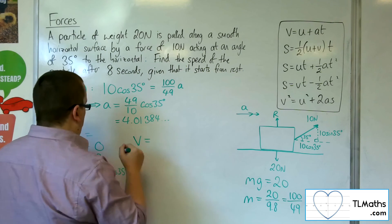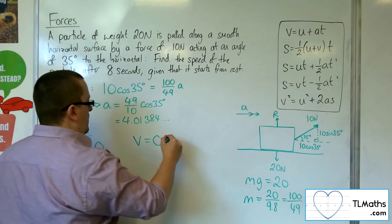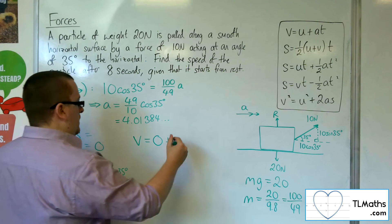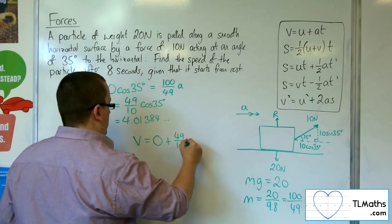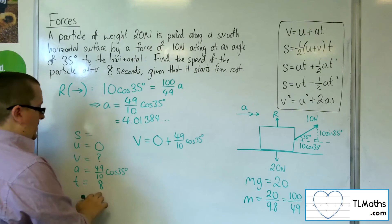So, V is equal to U, which is 0, plus A, which is the 49 tenths cosine 35, times by T.